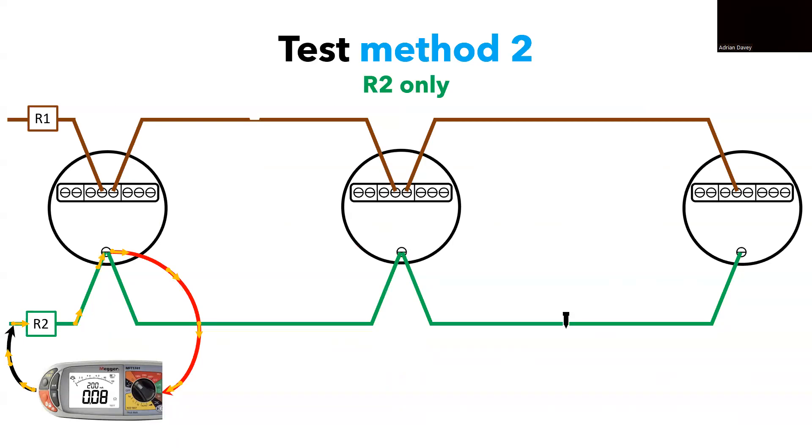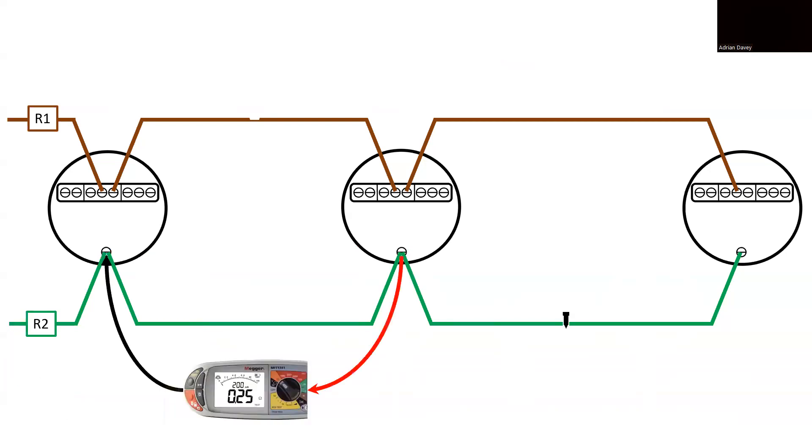Starting at the supply, you would test the feed into the first light yielding a value of 0.08 ohms. This suggests that the fault is not in this segment of the circuit. For added confirmation for the test results, you can again refer to table I5 in the on-site guide and calculate the expected value. Upon confirmation, you can progress to the next section of the circuit and assess the feed to the next light.